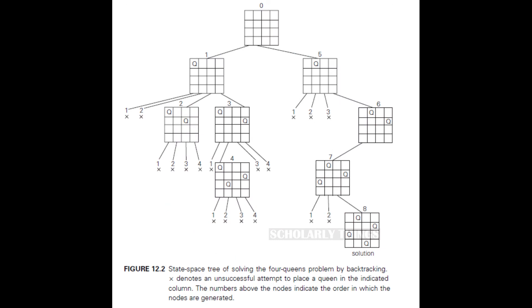This is the state space tree for the solution. We just found one of the solutions. We can either stop here, or let the algorithm continue from the leaf node at which it stopped to find additional solutions.